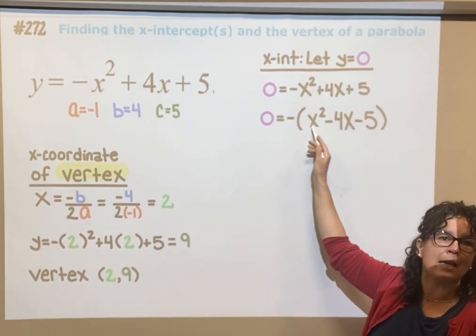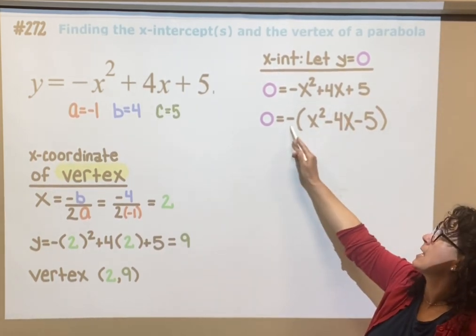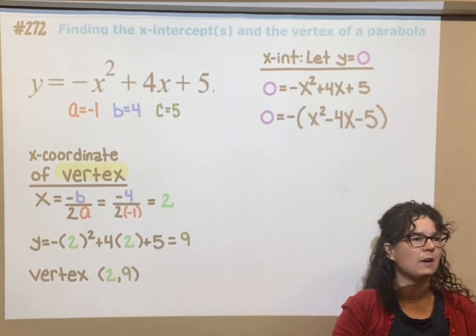Negative 1 times x squared is negative x squared. Negative times negative 4x, positive 4x, negative 1 times negative 5, positive 5.